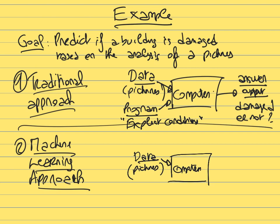Sometimes we want to make predictions but have no understanding of what governs what we're trying to predict. For example, predicting a stock price — we cannot write explicit rules saying if something happens, the stock goes up or down. We simply don't know the explicit rules governing stock prices.